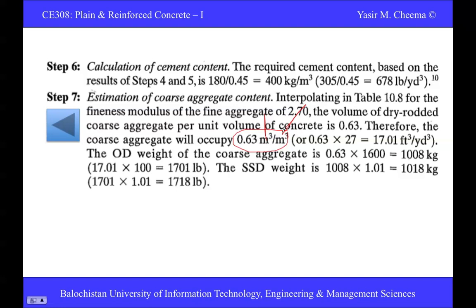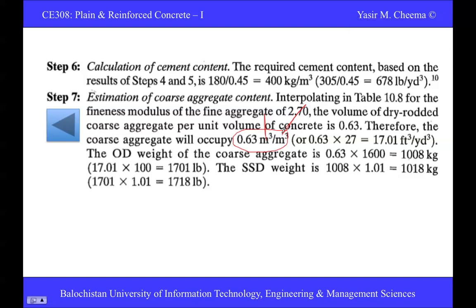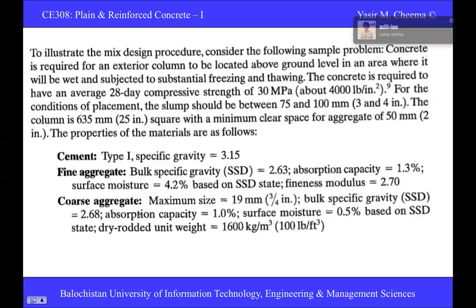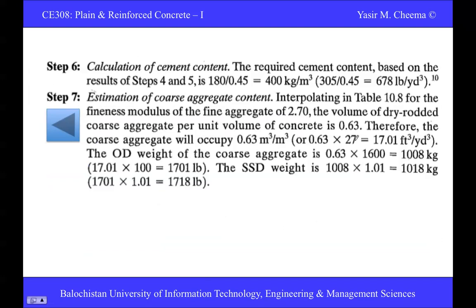So the volume of coarse aggregate per unit volume of concrete is 0.63 m³. Multiplying by the dry rodded unit weight of 1600 kg/m³: 0.63 × 1600 = 1008 kg — this is the oven-dry weight of coarse aggregate.